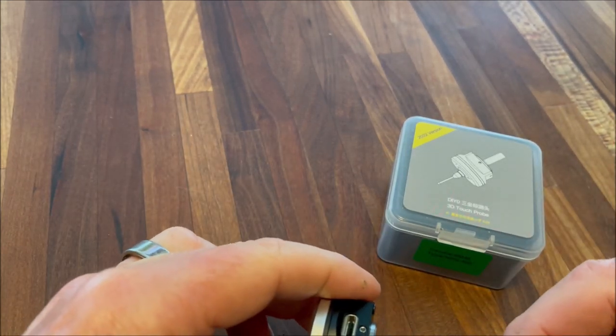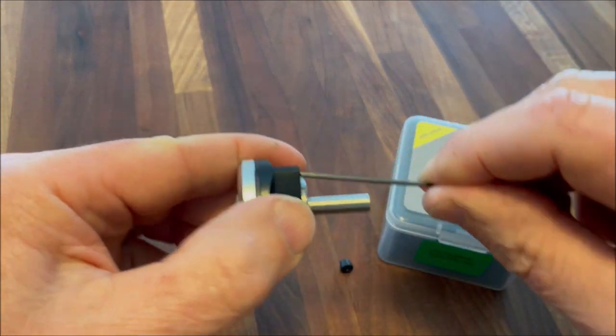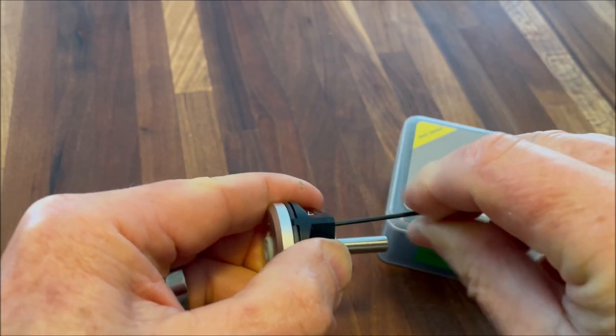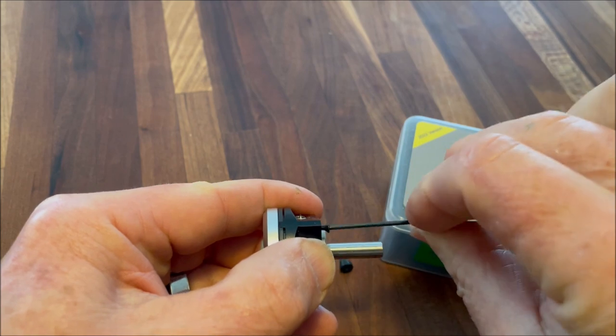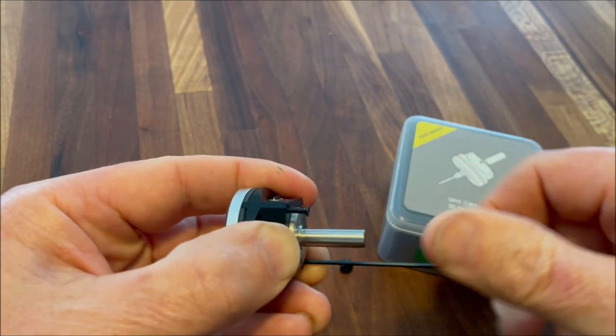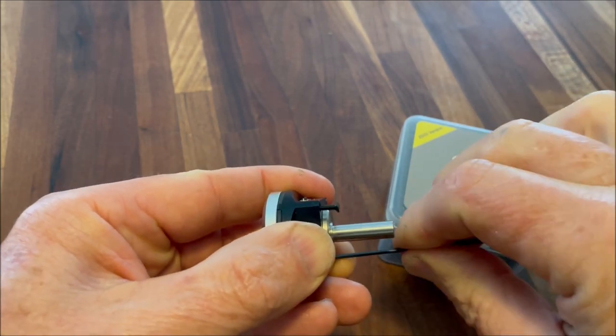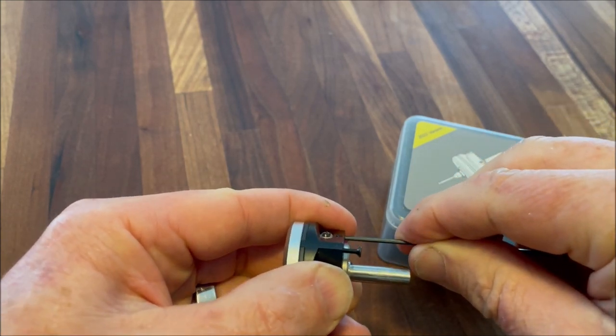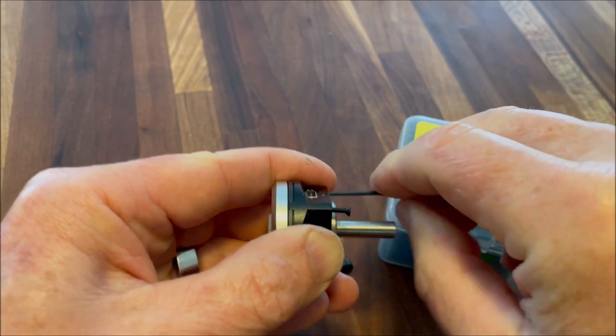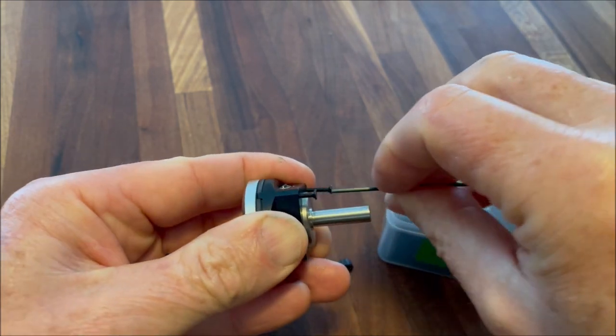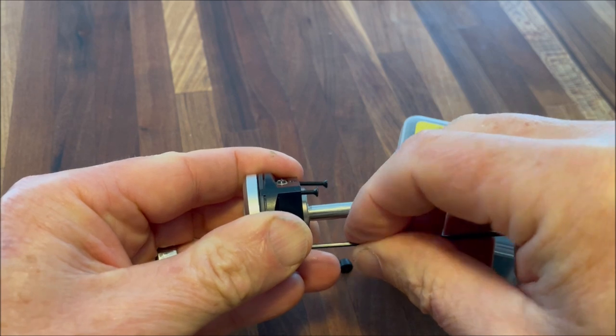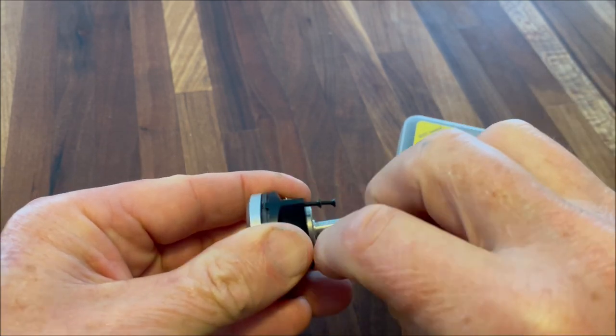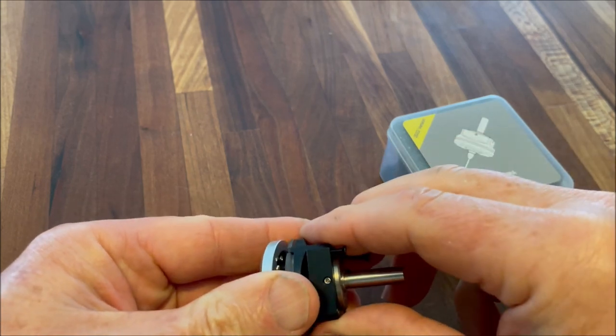I'm going to take this apart real quick and show you what the inside looks like. There are other YouTube videos that show it in a lot more detail. The piece that broke is actually acetyl homopolymer, otherwise commonly known as Delrin. At least that's what the eBay listing shows in the exploded view.